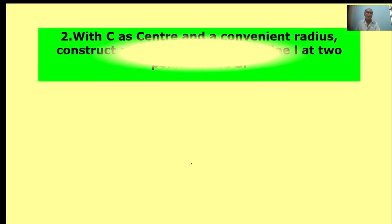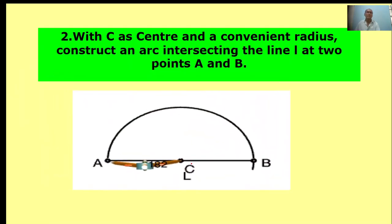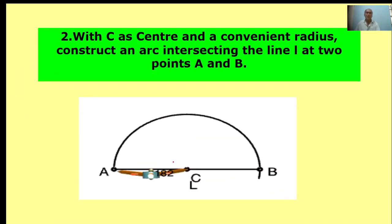With C as center and convenient radius, construct an arc intersecting the line L at two points A and B. First, center point C, take convenient radius to draw one arc. This arc intersects at point A and intersects at point B.